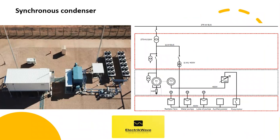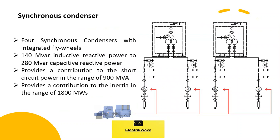Here the synchronous condenser is connected at 11 kV level and power is stepped up to 275 kV through a step-up transformer. An auxiliary transformer is tapped from the LV winding of the power transformer to feed auxiliary loads of the synchronous condenser. In this system solution, a single 3-winding transformer feeds two units of 70 MVAR capacity, so reactive power can be controlled from 140 MVAR inductive to 280 MVAR capacitive reactive power. It provides a contribution to short circuit power in the range of 900 MVAR and a contribution to inertia in the range of 1800 MW.